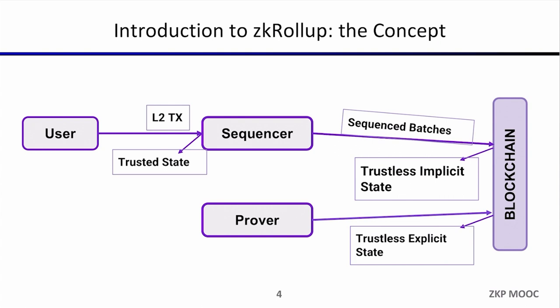There are two techniques for consolidating state. Optimistic rollups just post the state and have a challenging period of about one week where someone can dispute it. ZK rollups instead put a validity proof that proves this state is correct — a proof that the execution of these transactions on top of this block results in exactly this state root. This can be computed in minutes, and once the proof is verified on-chain you can withdraw funds or move them to other rollups.